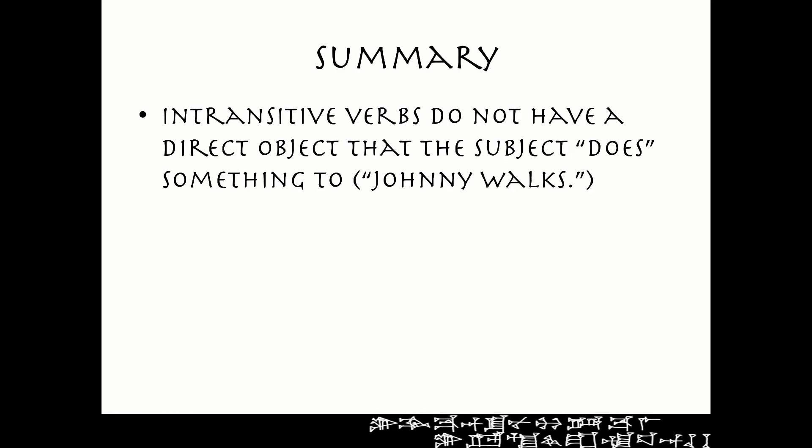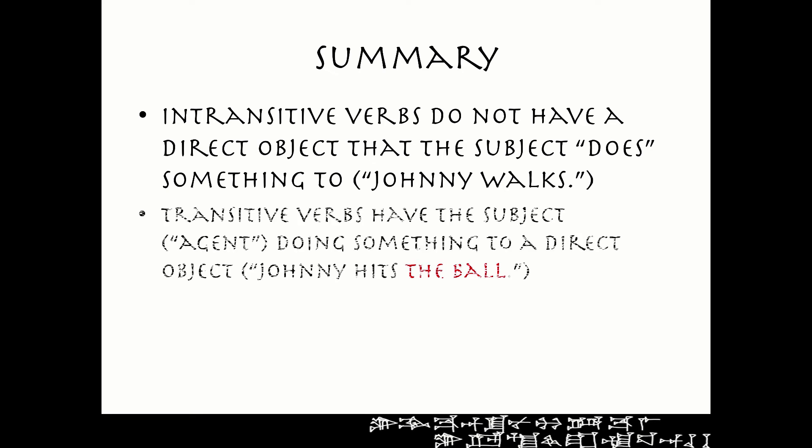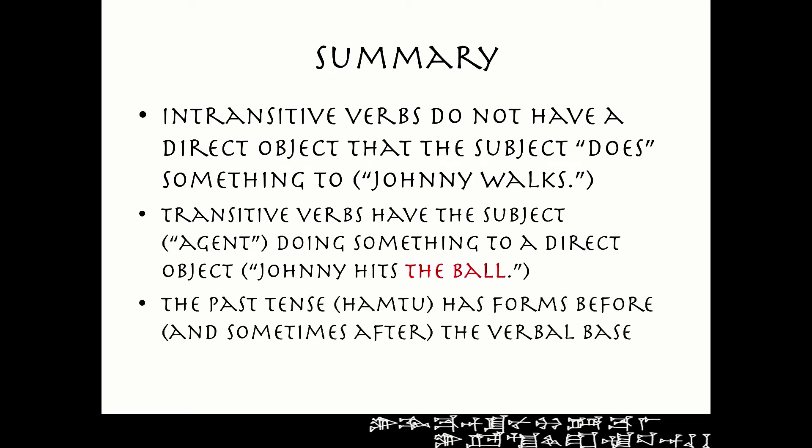So in summary: intransitive verbs do not have a direct object — 'Johnny walks,' 'Sally swims.' A transitive verb has a subject, which we refer to in Sumerian as the agent, doing something to a direct object — 'Johnny hits the ball,' where Johnny is the agent. The past tense, or hamtu verbs, have forms before and sometimes after the verbal base. In the singular: nothing, E, N, B. In the plural: nothing-enden, E-enzen, and N-esh.